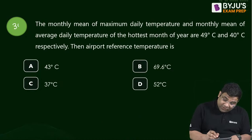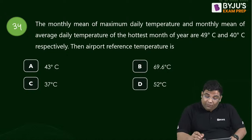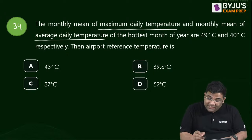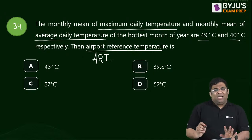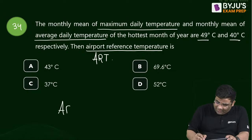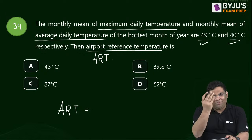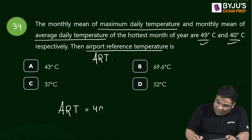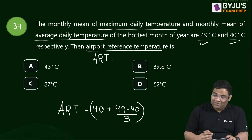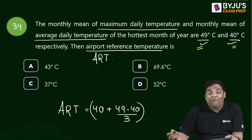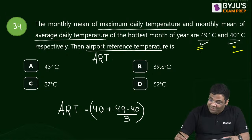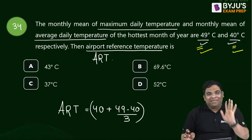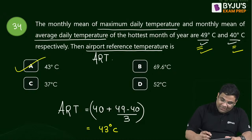Question 34: Airport Reference Temperature (ART). Given monthly mean of maximum daily temperature = 49°C, monthly mean of average daily temperature = 40°C. Formula: ART = smaller + (larger − smaller)/3 = 40 + (49 − 40)/3 = 40 + 3 = 43°C. Simple rule: small + (large − small)/3.